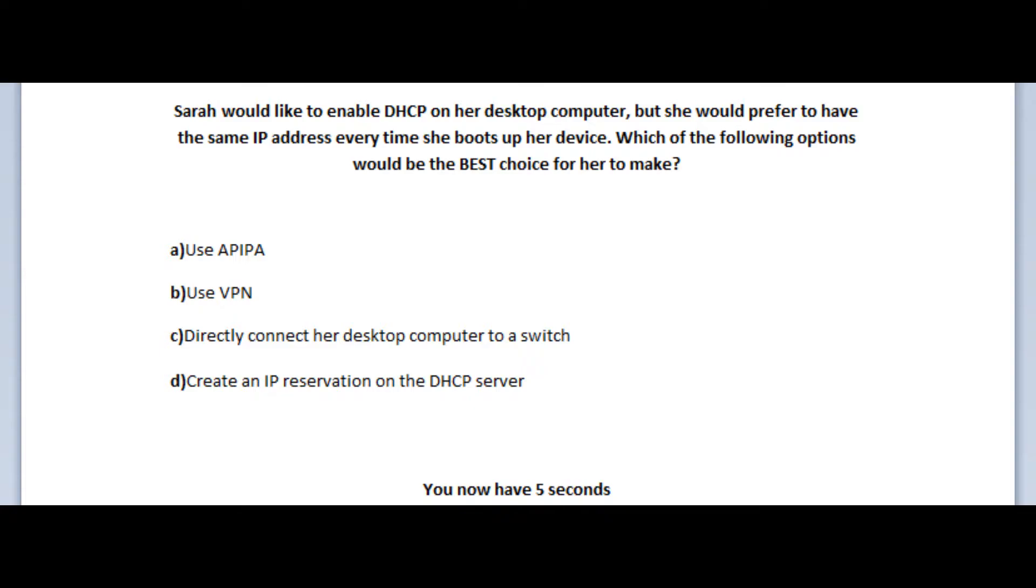Let us jump to our third question. Sarah would like to enable DHCP on her desktop computer but she would prefer to have the same IP address every time she boots up her device. Which of the following options would be the best choice for her to make? Is it A to use APIPA? Is it B to use VPN? Is it C to directly connect her desktop computer to a switch? Or is it D to create an IP reservation on the DHCP server? You now have 5 seconds.